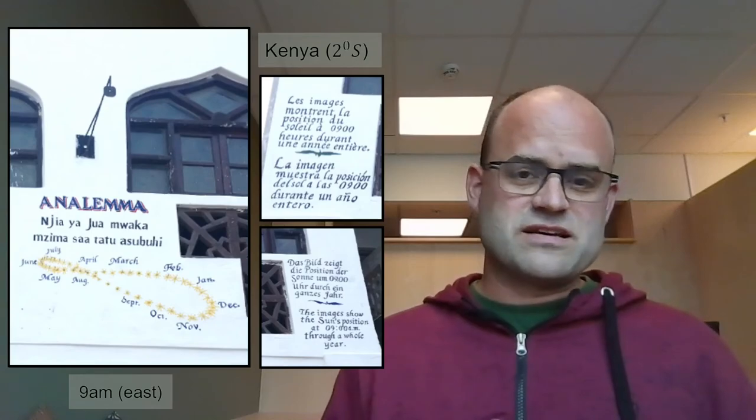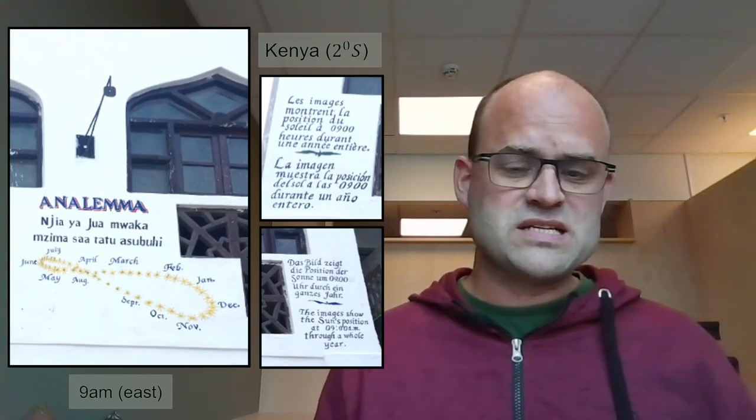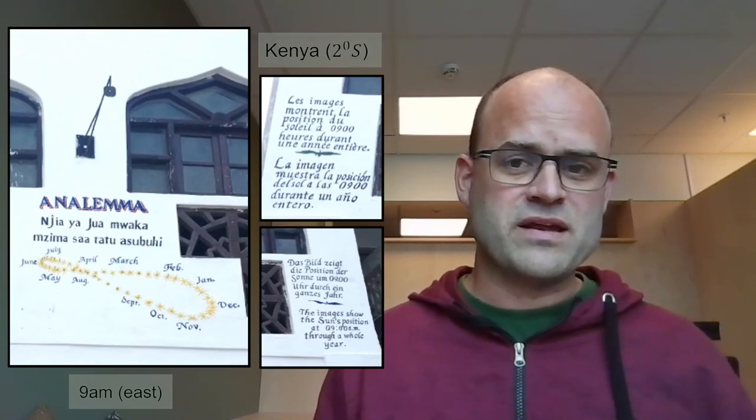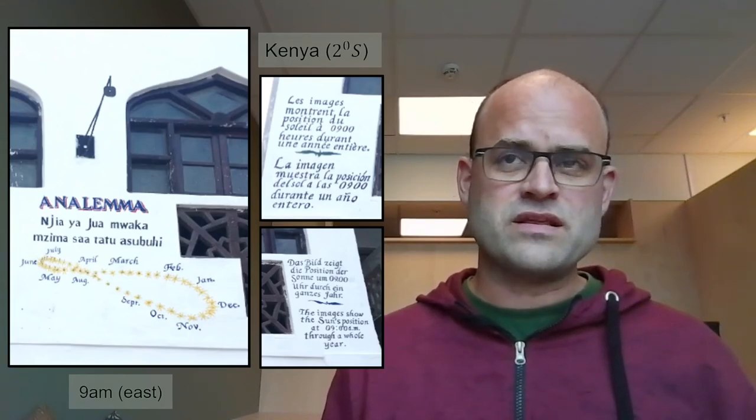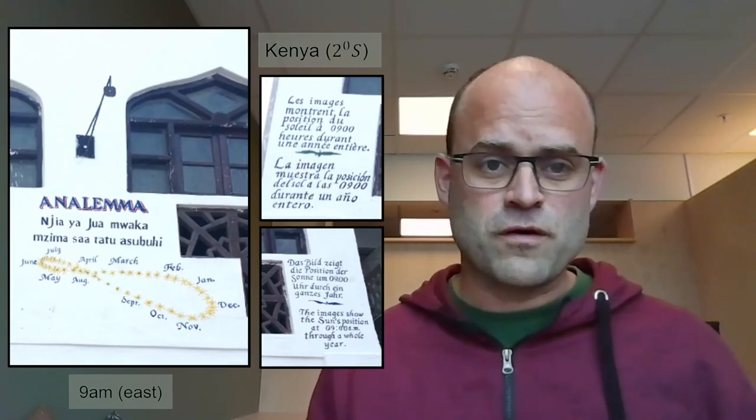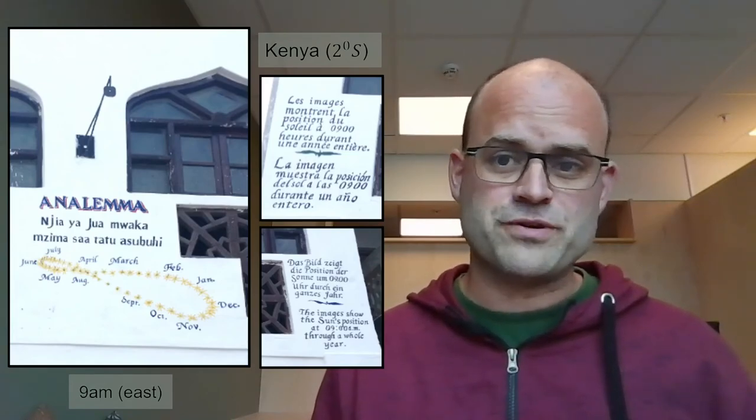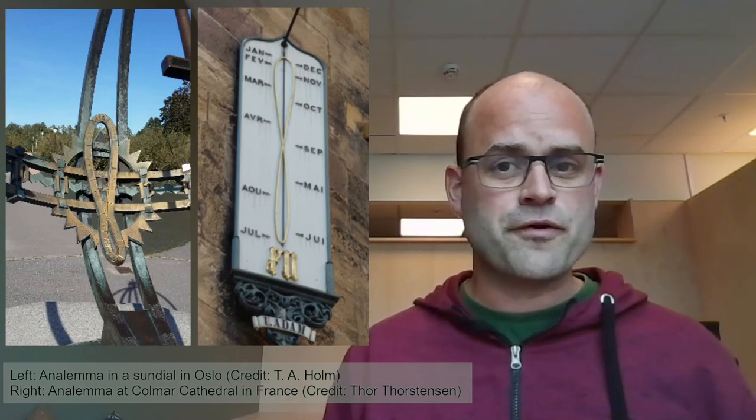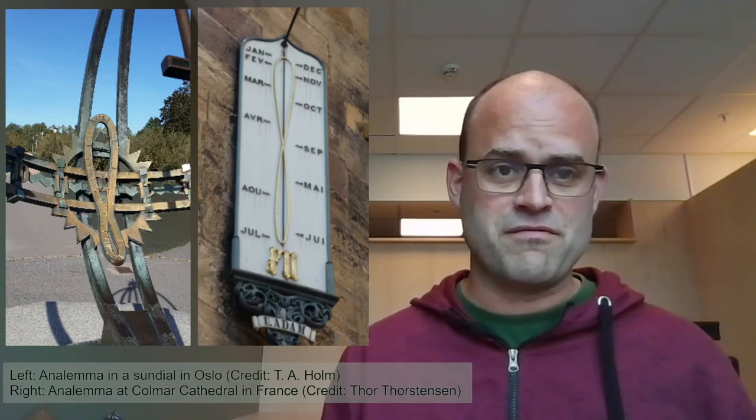You can make this everywhere in the world. This is an analemma in Kenya which is very nicely made. It's made in the morning and you can actually read the latitude of the observing place. This is two degrees south. You will also find analemmas in sundials and various museums. I recommend you start looking around and see if you have an analemma close to where you live.